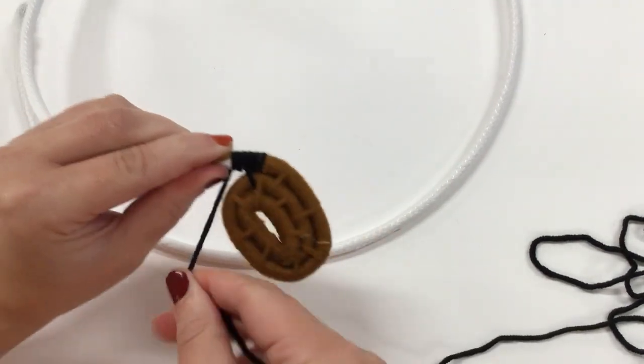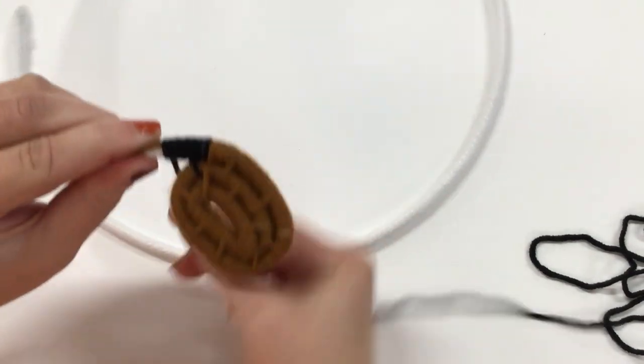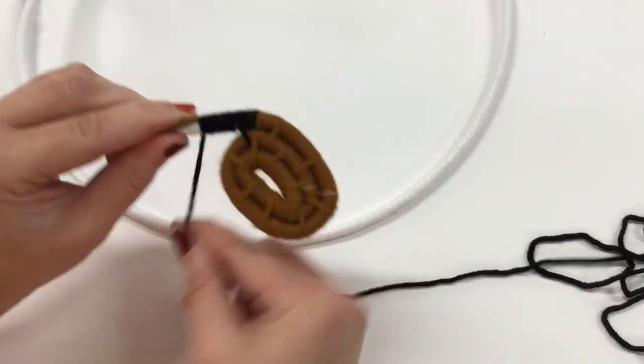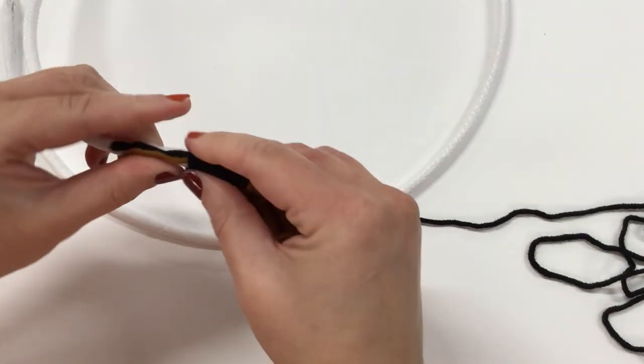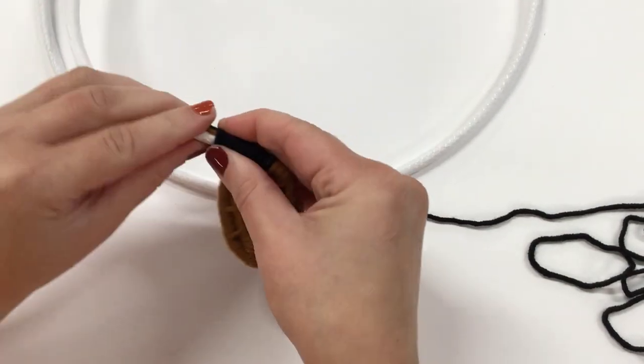Pulling it tight, and I'll go again with my eight coils. So one, two, three, four, five, six, seven, eight. And you can see again it's covering up that tail that I have here.